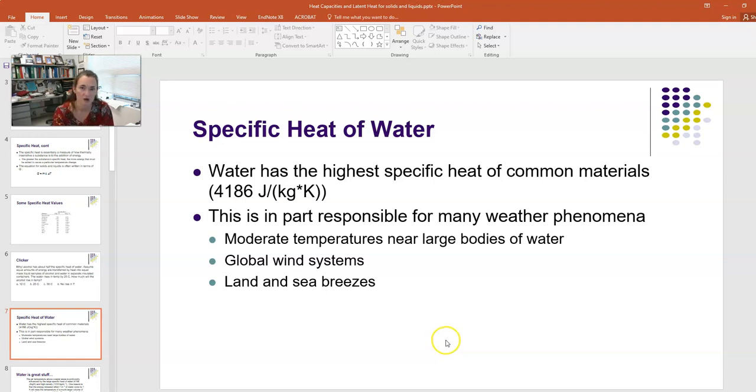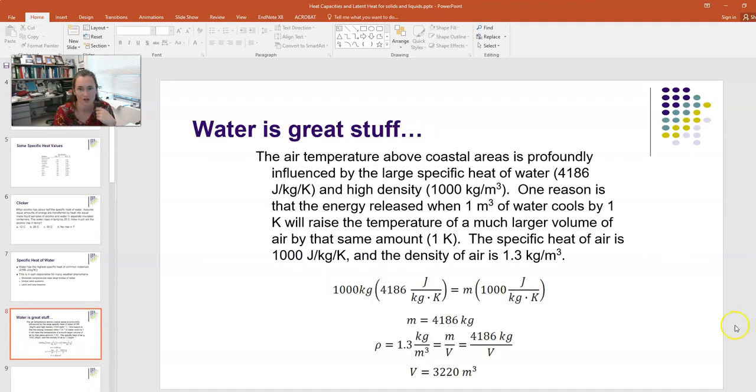You've probably noticed that at the seaside you'll find more moderate temperatures and weather than inland. This is also responsible for many global wind systems. The temperature gradient from shore to inland causes pressure differences that drive global wind systems and those land and sea breezes that are so pleasant when you're sitting next to the ocean.